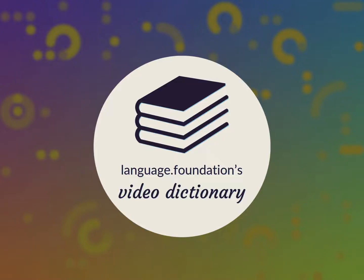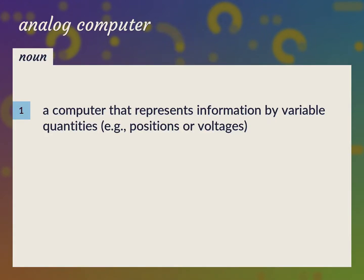Language.Foundation's Video Dictionary, helping you achieve understanding. A computer that represents information by variable quantities, e.g. positions or voltages. Analog Computer.